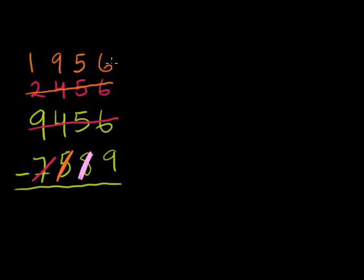And if I subtract 80 from this top number, I can just think of, well, what's 195 minus 8? Well, 195 minus 8, let's see, 15 minus 8 is 7. So 195 minus 8 is going to be 187. And then you still have the 6 there. So essentially I said, 1956 minus 80 is 1876.